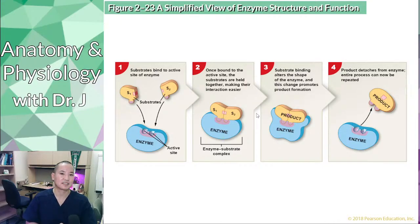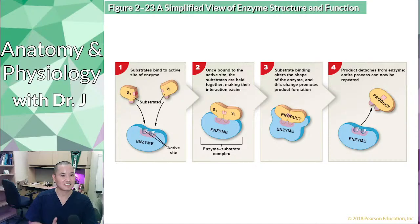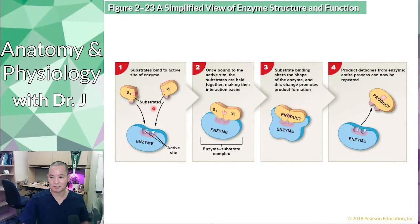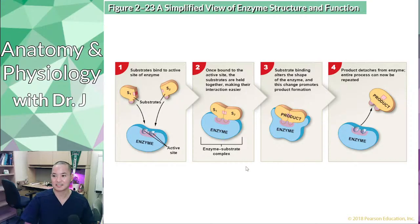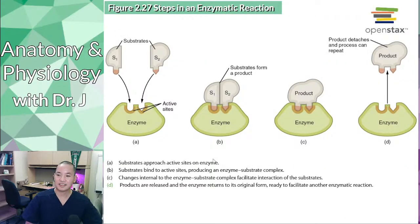Do enzymes always break things apart? No. If things only broke apart, you'd have a hard time doing anabolic reactions and synthesizing things in your body. Enzymes can also stitch things together — they can help not only with decomposition reactions but also with synthesis reactions. In this example we have two substrates or reactants forming a final product, so we're doing an anabolic or synthesis reaction.